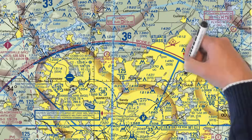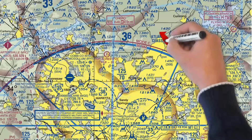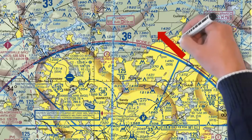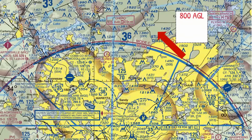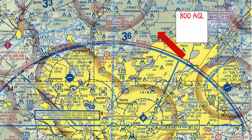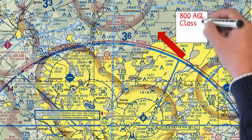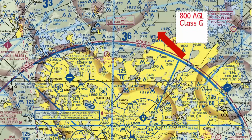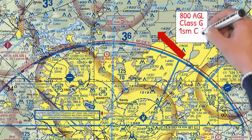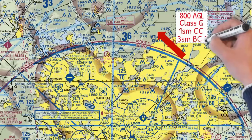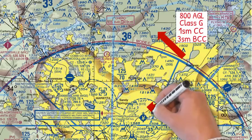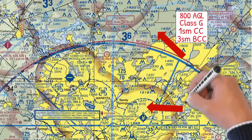So let's test what we've learned. Let's say you're right here at 800 feet AGL. What type of airspace are you in and what is your visibility and cloud clearance requirement? If you said Class G airspace, you're correct. Your visibility and cloud clearance requirements during the day? One mile and clear of clouds. How about for night? Three miles and basic cloud clearance — 500 below, 1,000 above, and 2,000 horizontal.